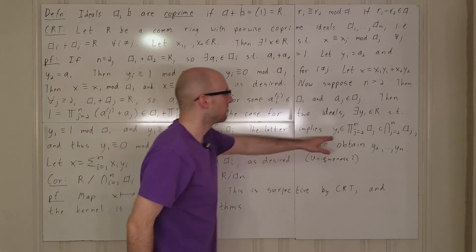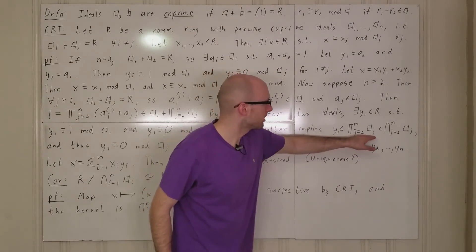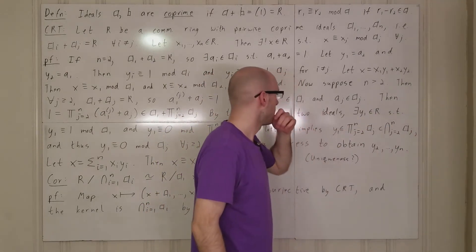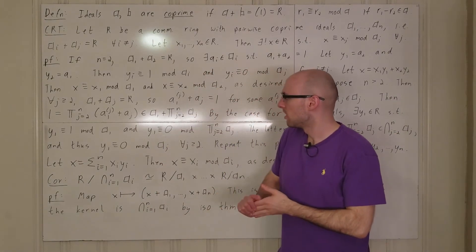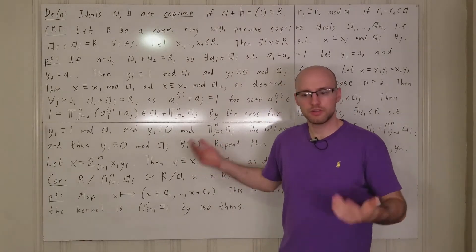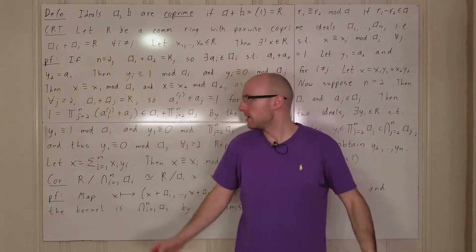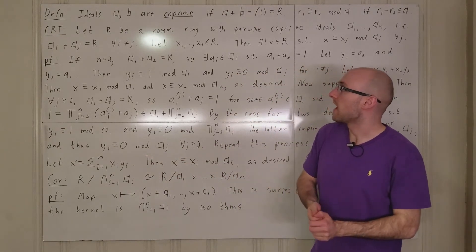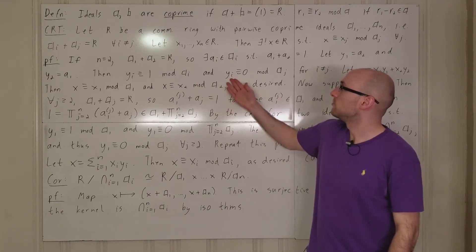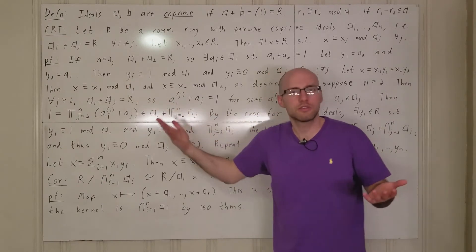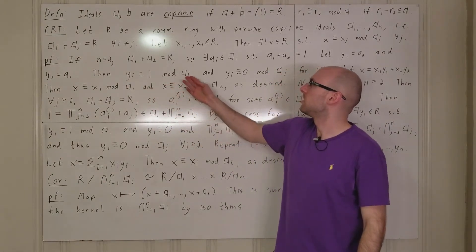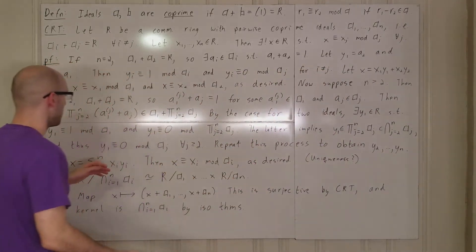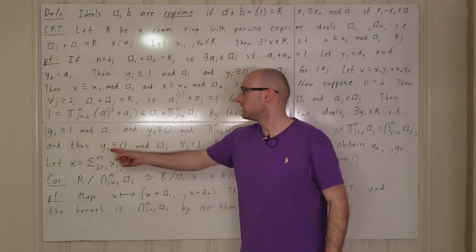Since the product of a2 through an is contained in the intersection of a2 through an, y1 being in the product implies y1 is in the intersection. That means for every j greater than or equal to 2, y1 is in aj, so y1 is congruent to 0 mod aj. This gives us exactly the delta-function property: y1 is congruent to 1 mod a1 and congruent to 0 mod aj for all j not equal to 1.